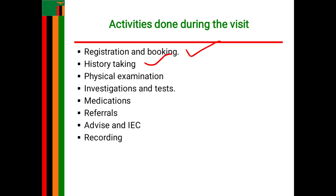Apart from obstetric history, you also collect dietary history during the first antenatal visit. You ask what type of food the woman likes, the number of meals per day, and whether she eats non-foods such as soil (pica). This helps you give appropriate IEC.